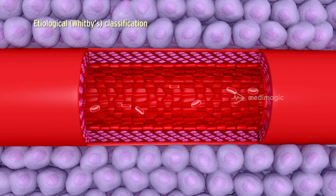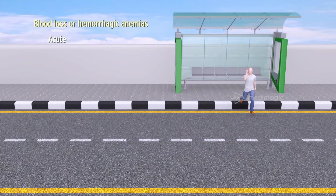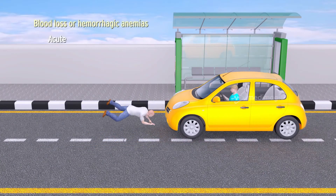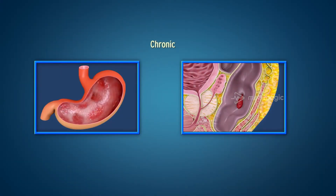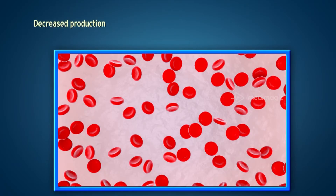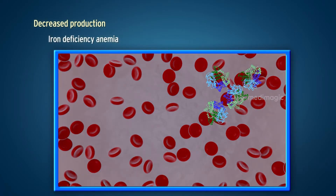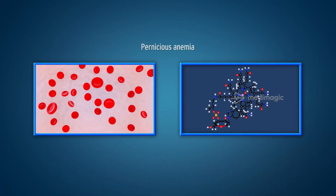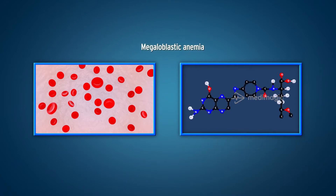Blood loss or hemorrhagic anemias include acute blood loss due to accidents and chronic causes such as peptic ulcers and hemorrhoids. Decreased production anemias include iron deficiency anemia, pernicious anemia due to deficiency of vitamin B12, and megaloblastic anemia due to deficiency of folic acid.